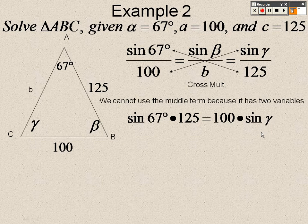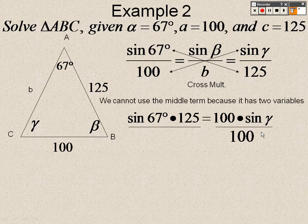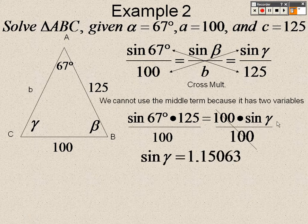So to get this by itself, then I have to divide by 100. And when I do that, I end up getting sine of gamma equals 1.15063.